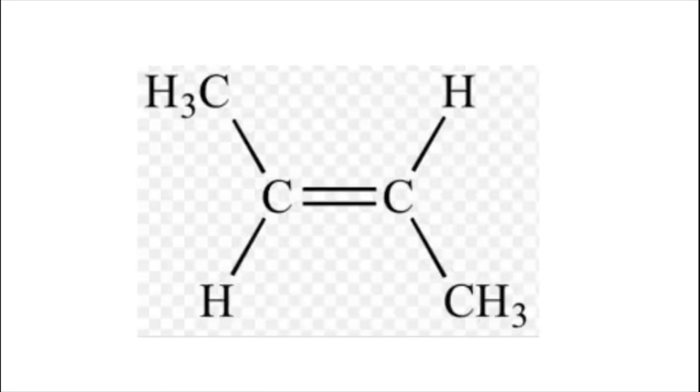Now for some problems, name this carbon structure. So you can see there's four carbon atoms and there is a double bond between the second and third carbons. So this would be called but-2-ene.